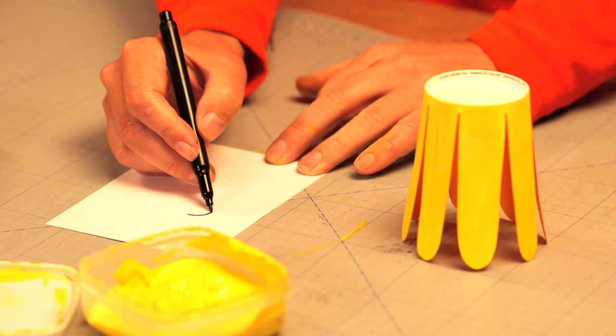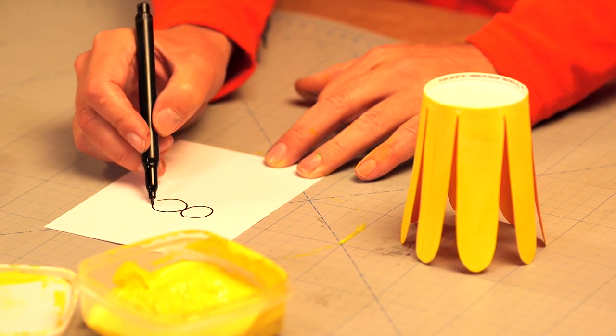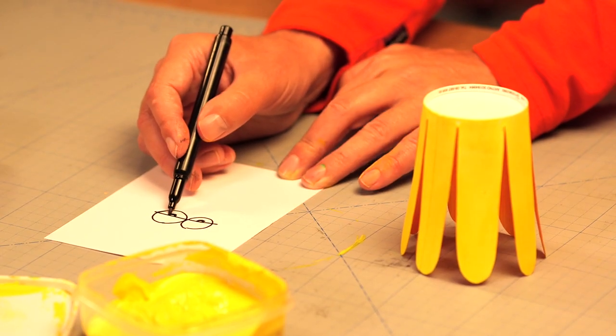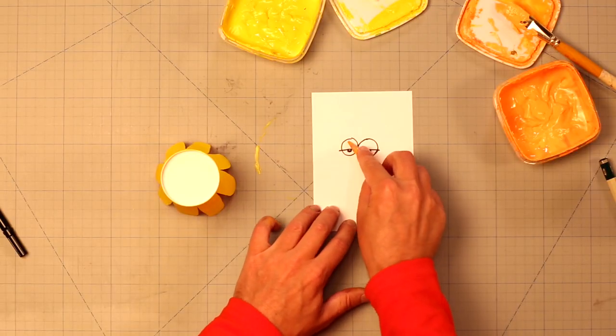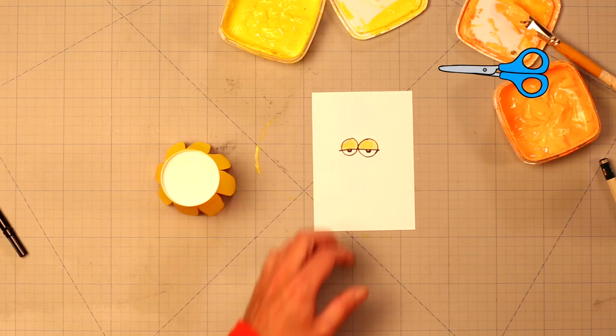Then we get drawing. Eyes first. Color them in. And cut them out.